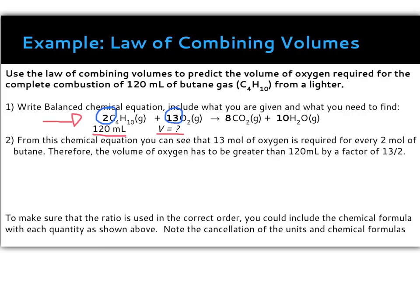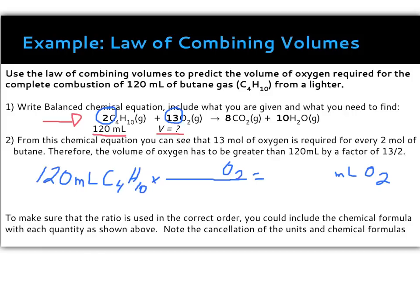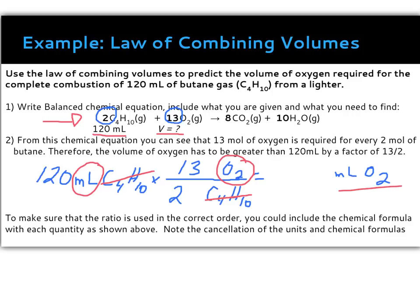To find the volume of oxygen, start with what we know: 120 milliliters of butane (C₄H₁₀), then multiply by a conversion factor to get milliliters of oxygen. By unit analysis, oxygen goes on top and C₄H₁₀ on the bottom. I know I need 2 moles of C₄H₁₀ for every 13 moles of oxygen. Crossing out butane leaves milliliters of oxygen. So I do 120 times 13 divided by 2, and my answer is 780 milliliters of oxygen — three significant digits, matching the question.